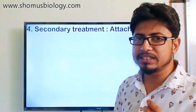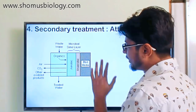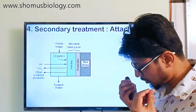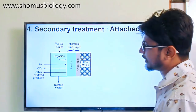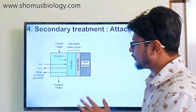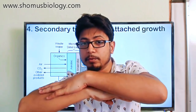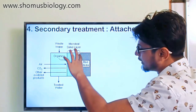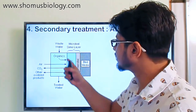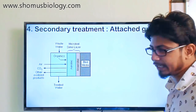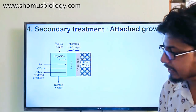In secondary treatment we can also use attached growth. A bed media is prepared with large particles like stone chips or rocks. Bacteria produce an anaerobic layer close to the bed surface and an aerobic layer on top, because the aerobic layer blocks oxygen from reaching the anaerobic layer. Water is sprinkled on top of these layers and both aerobic and anaerobic bacteria take nutrients from the water as it passes through the bed medium.